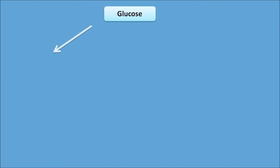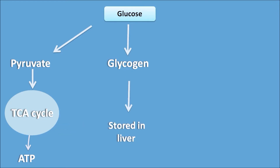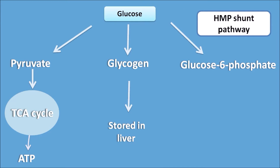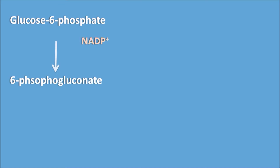What is the fate of glucose? Glucose can be converted to pyruvate by glycolysis, and then pyruvate can enter the TCA cycle to produce ATP molecules. Similarly, glucose can also be converted to glycogen, which is stored in the liver. Glucose can also be converted into glucose-6-phosphate, where the HMP shunt pathway operates, converting glucose-6-phosphate into 2 NADPH molecules and 1 ribose-5-phosphate. Glucose-6-phosphate is converted to 6-phosphogluconate, with NADP+ being converted to NADPH and H+.